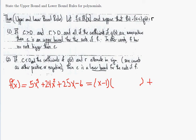Doing synthetic division: 5, 24, 25, -6. I get 5. 5 times 1 is 5. 24 plus 5 is 29. 29 times 1 is 29. 25 plus 29 is 54. 54 times 1 is 54. And then 54 minus 6 is 48.